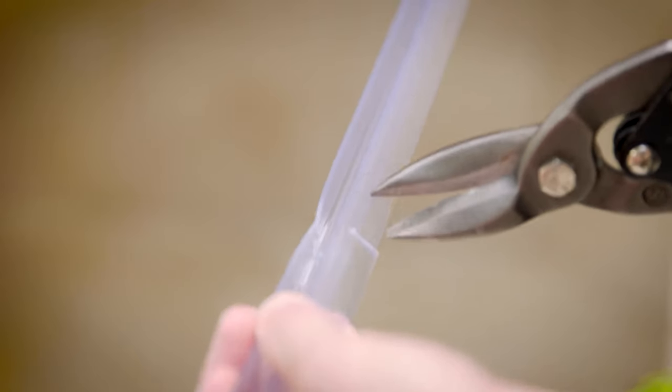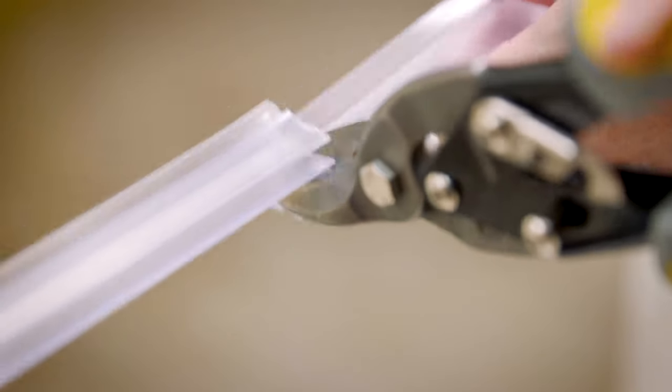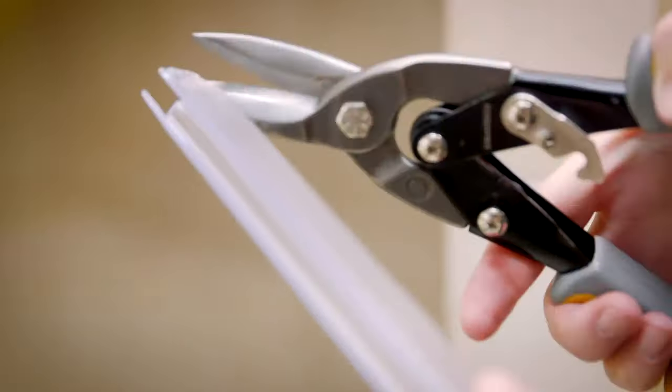Once you have the correct measurement, use the cutting pliers to trim the excess. Depending on your enclosure, you may need to adjust the sweep shape by trimming the sides for more secure placement.